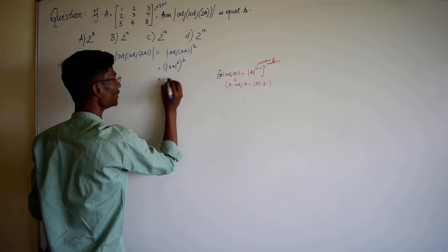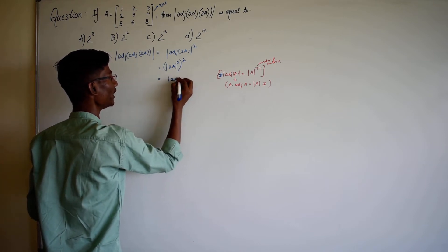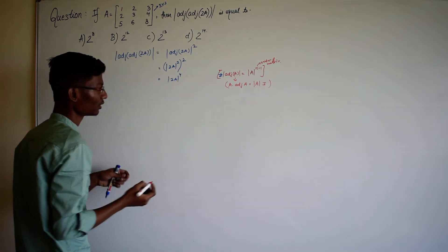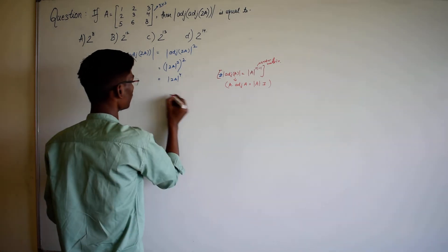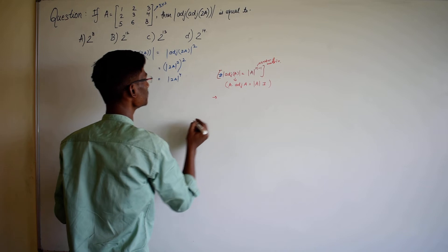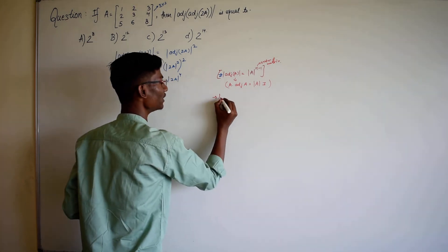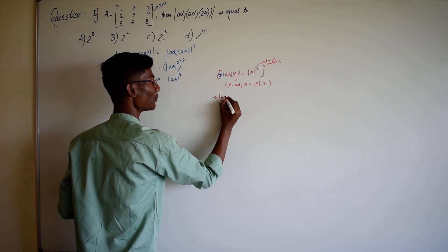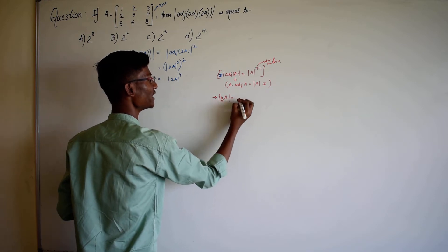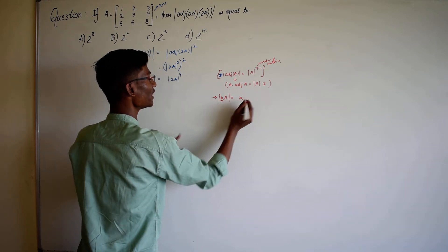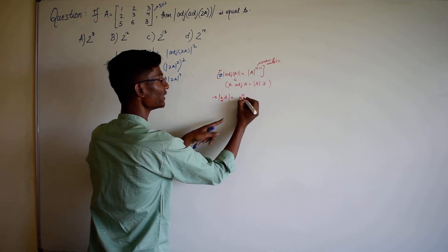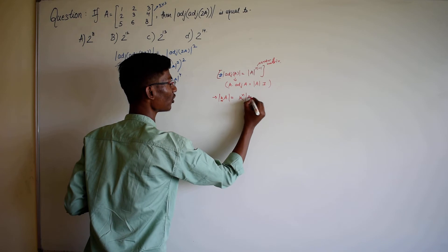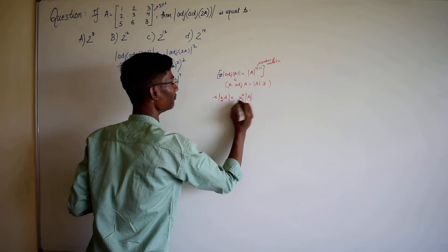So we get determinant of 2A raised to power 4. Now we can use the second identity: the determinant of any constant k multiplied by a matrix equals k raised to power n — the order of the matrix — times the determinant of that matrix.